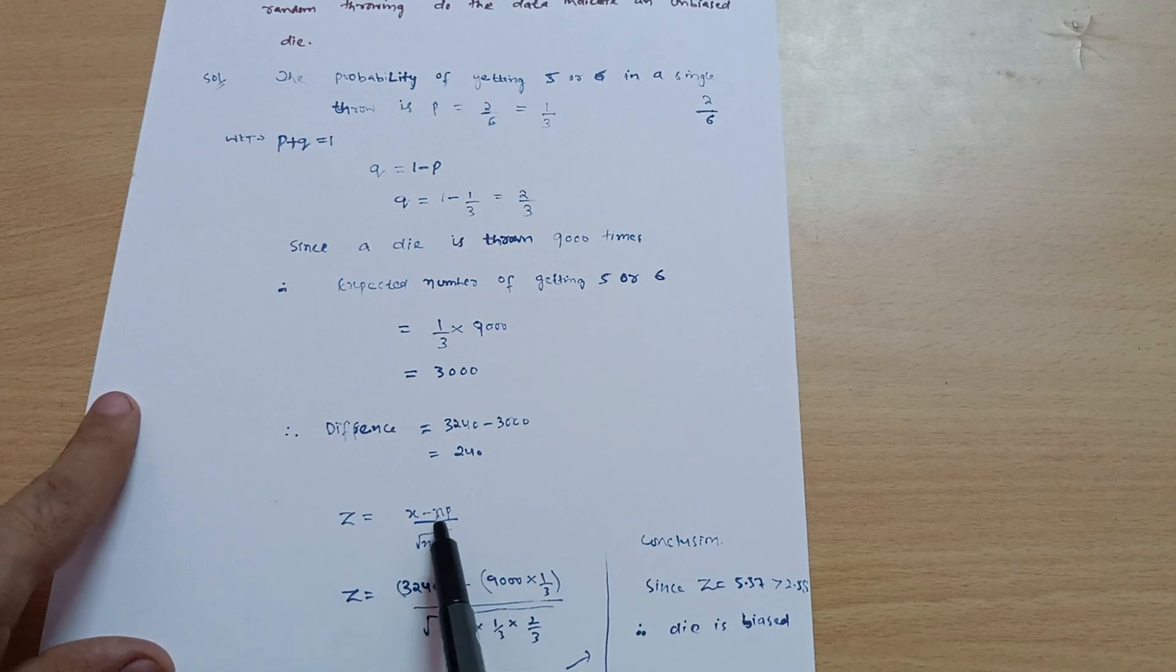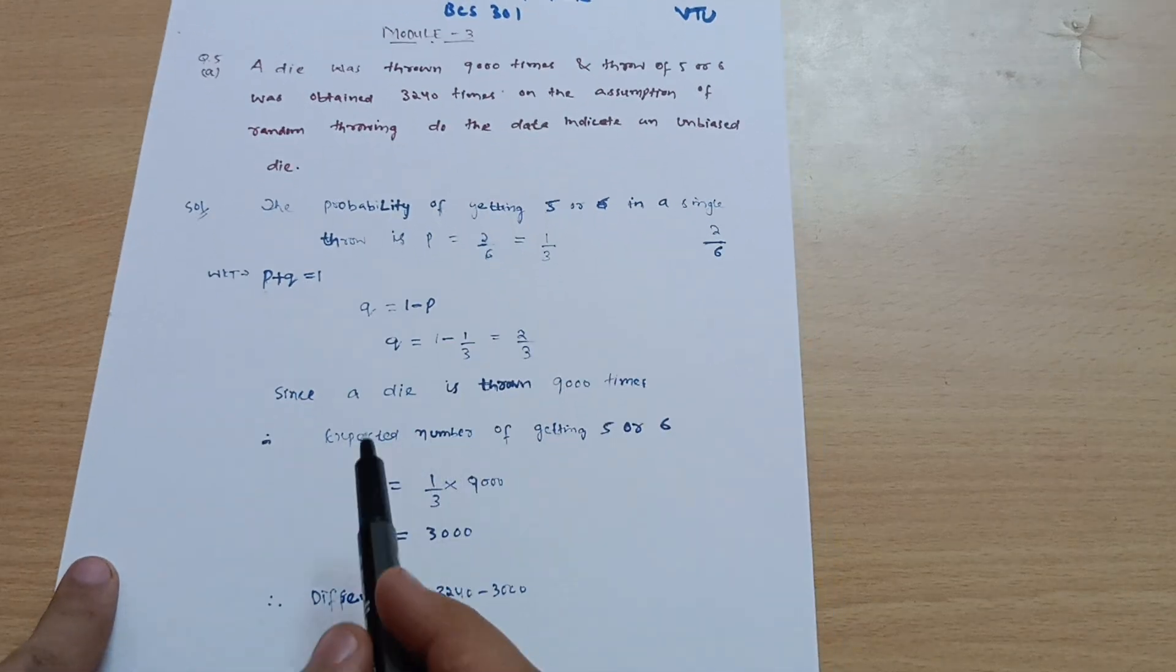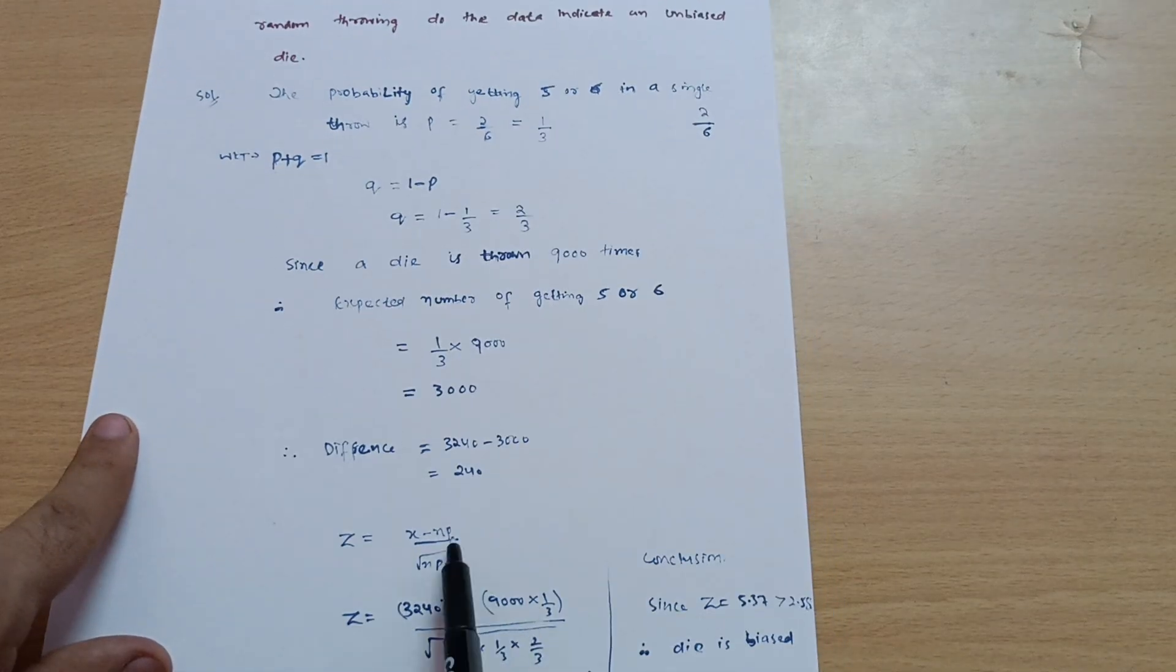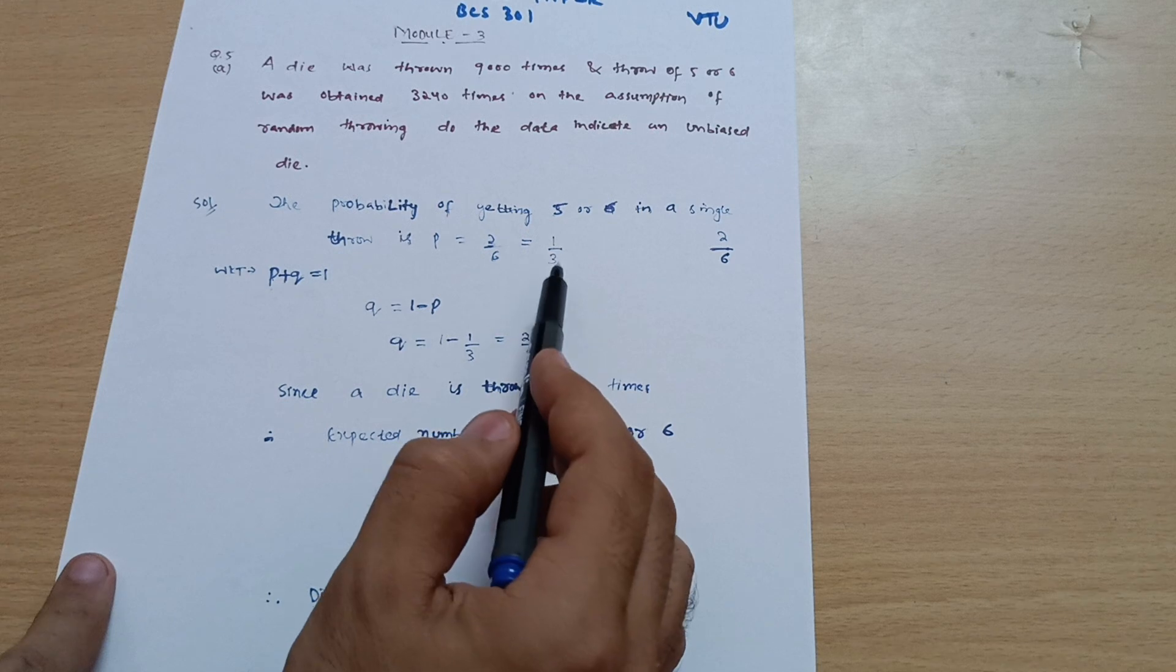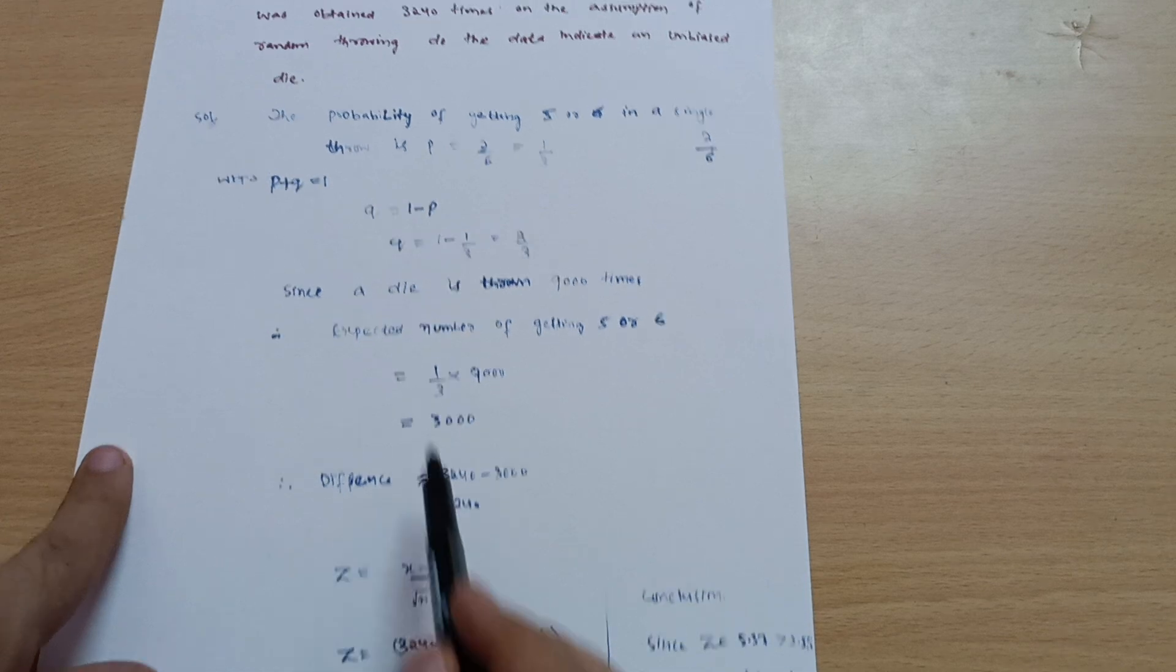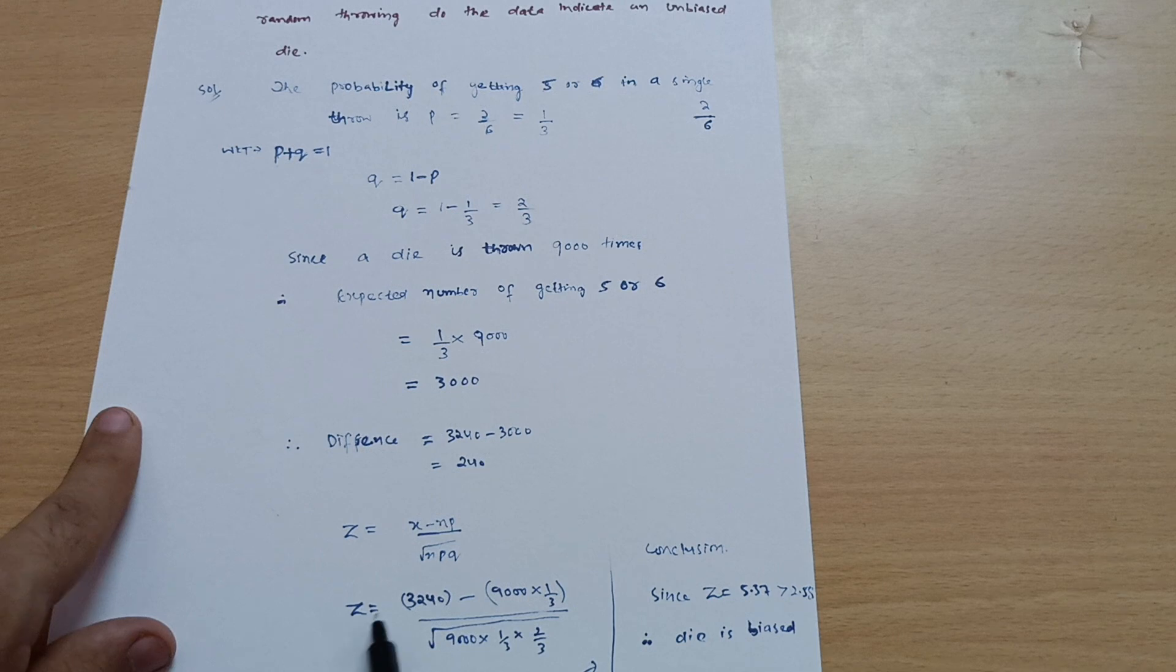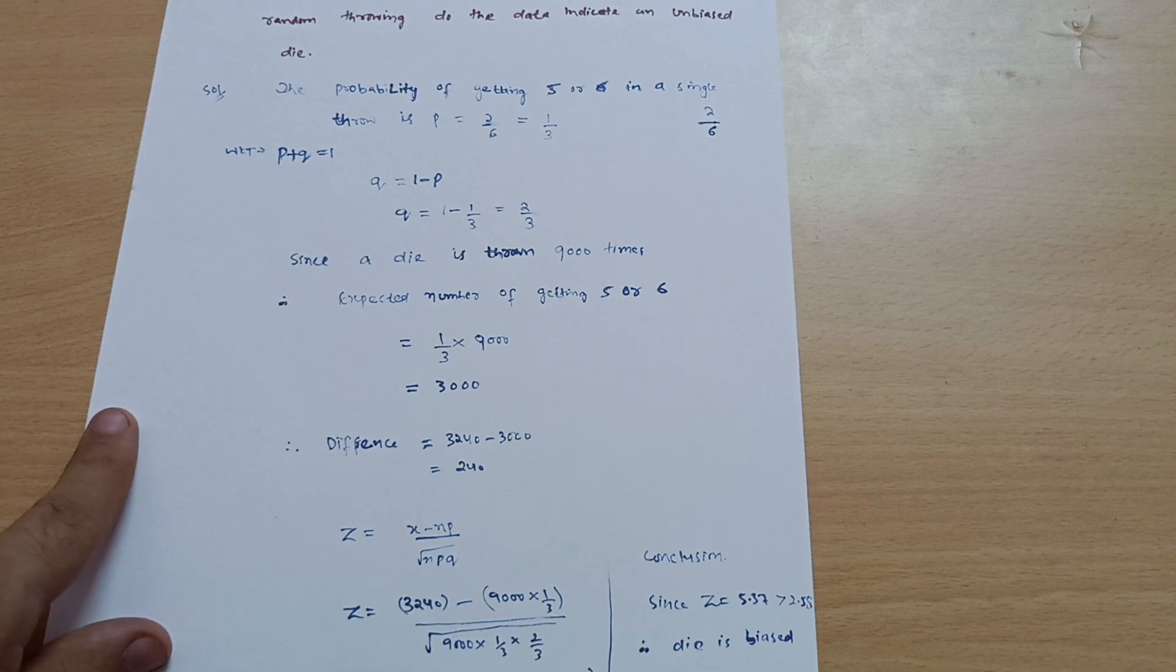So this is 3240 minus n is the total number of times the die is thrown, that is nine thousand, times probability one by three, divided by root of npq: nine thousand into one by three and Q is two by three. Once you calculate this you will get z equals 5.37.